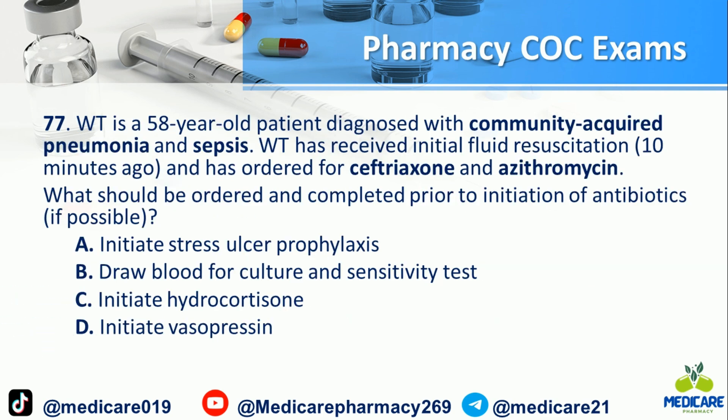Number 77: Debiliti is a 58-year-old patient diagnosed with community-acquired pneumonia and sepsis. Debiliti has received initial fluid resuscitation 10 minutes ago and has orders for ceftriaxone and azithromycin. What should be ordered and completed prior to initiation of antibiotics, if possible? a. Initiate stress ulcer prophylaxis. b. Draw blood for culture and sensitivity test. c. Initiate hydrocortisone. d. Initiate vasopressin. The answer is B.